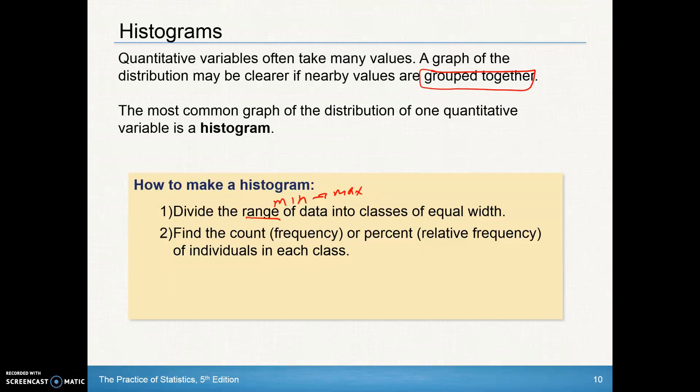So we'll find the count, which is also called frequency, or the percent, which is relative frequency, of individuals in each class. We're going to look at how many do we have in each of those different bins, how many do we have in each of those different classes.